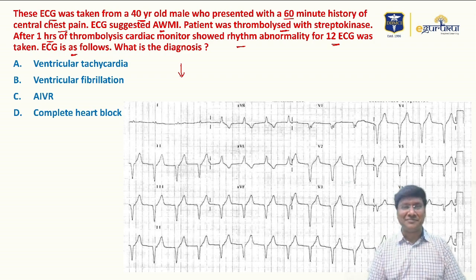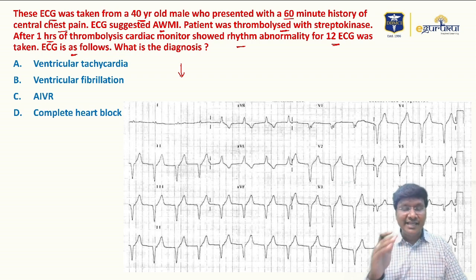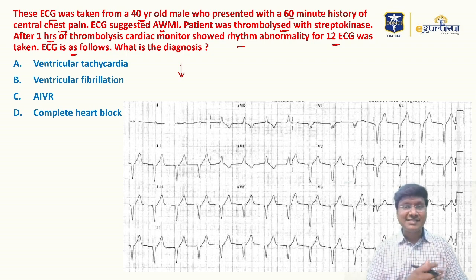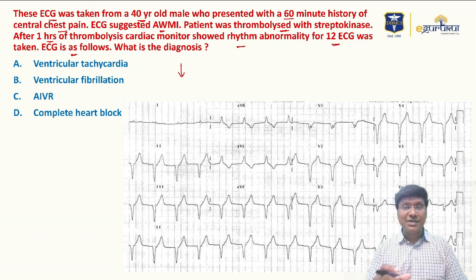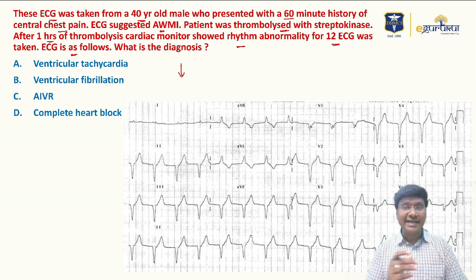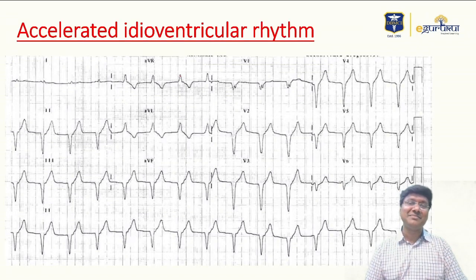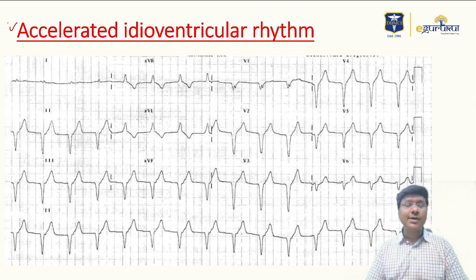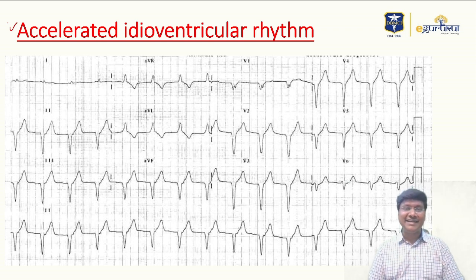Imagine you are the registrar in the ICU and the cardiologist is away in the cath lab. You need to handle this scenario. You should be able to diagnose this rhythm abnormality. The rhythm abnormality in this ECG is accelerated idioventricular rhythm, or AIVR.